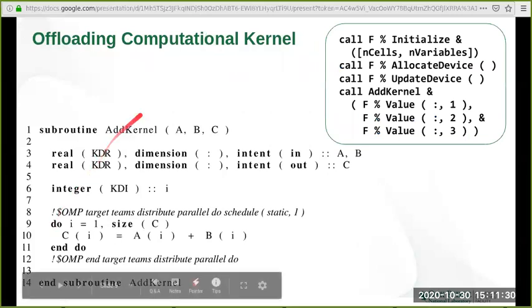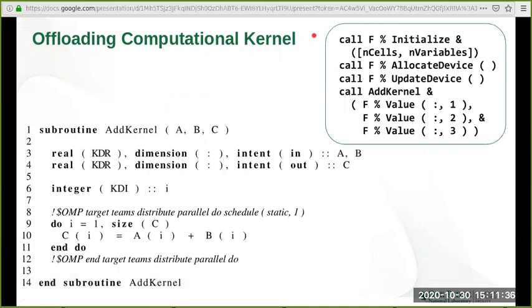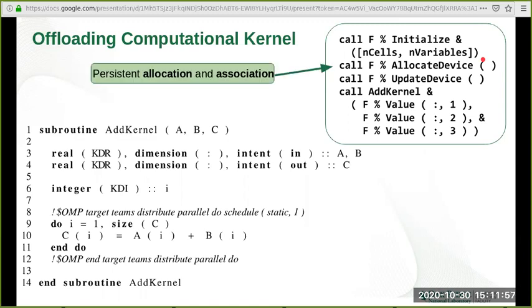On this slide, we give an example of how we put all of this together to offload a computational kernel. On the right box here, the storage form object F is initialized with the number of cells and number of variables. Then the method allocate_device is called to mirror the allocation on the GPU memory. Then we call update_device to update the GPU memory with data from the host. Then we call the kernel add_kernel with the appropriate variables as arguments to the kernel.